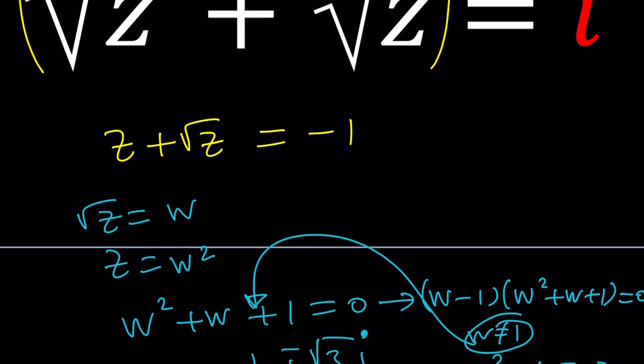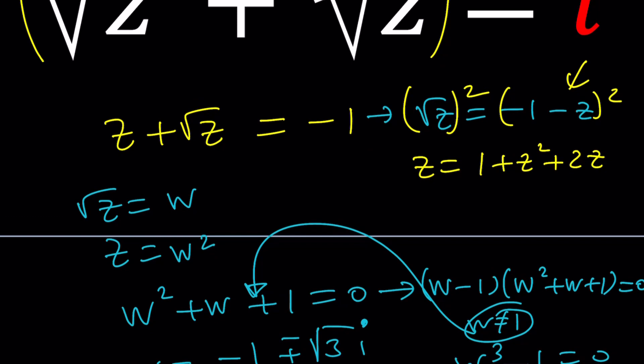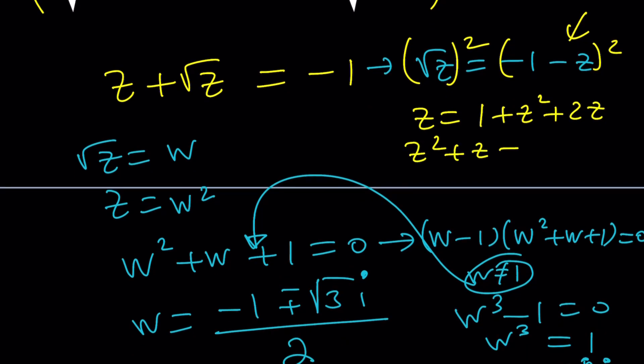But if you didn't want to proceed like that, you could go ahead and isolate the radical and square both sides. You should be getting the same thing. Let's see. This gives us z equals one plus z squared plus two z. By the way, I thought about this as z plus one, because negation squared, negative one squared is going to be one.